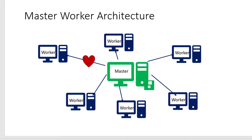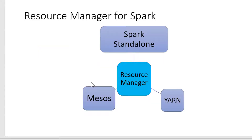One is the Spark standalone resource manager, which comes along with Spark, so we don't need any external resource manager — Spark itself comes with its own resource manager where we can designate one machine as a master and all others as workers. Spark can also be deployed within YARN, that is Yet Another Resource Negotiator, which is part of Hadoop 2, or we can make it work as part of Mesos, which is an open source project within Apache.